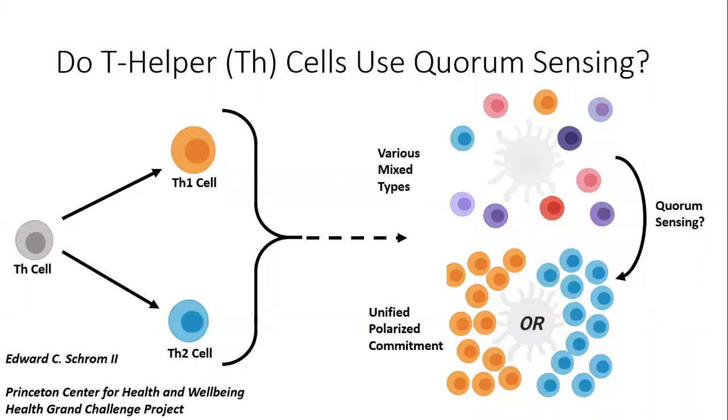Sometimes, T helper groups adopt a variety of mixed types, including Th1, Th2, and many hybrids between the two. Other times, T helper groups polarize entirely toward Th1 or Th2.